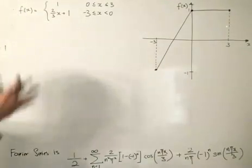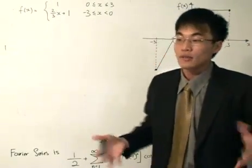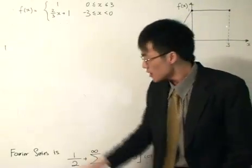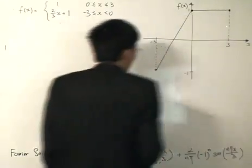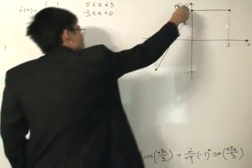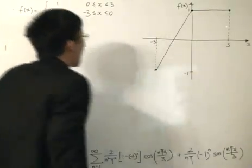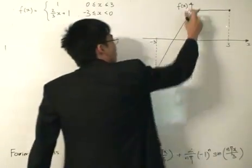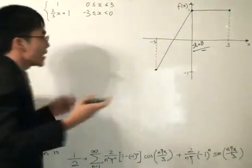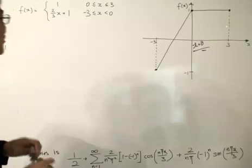Now we move to the convergence. The convergence theorem tells us that at points where f(x) is continuous, the Fourier series converges to the function. I stress again: the convergence test comes from the function itself, not from the Fourier series. From minus 3 to 0, the Fourier series converges to that part of the graph, and likewise for 0 to 3. However, we recognize there's a discontinuous point at x equals 0, and because of that we need to use the convergence test to see what the Fourier series converges to there.